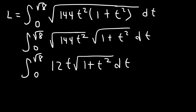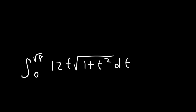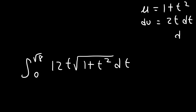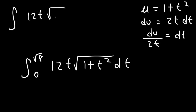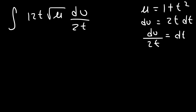So how can we integrate this expression? I would recommend using u-substitution. If we set u equal to 1 plus t squared, du is going to be 2t times dt. So solving for dt, that's going to be du over 2t. So we're going to have the integral of 12t times the square root of u, and dt can be replaced with du over 2t. So we can cancel t.